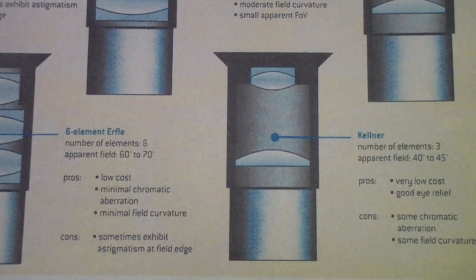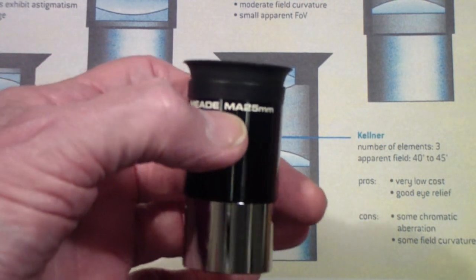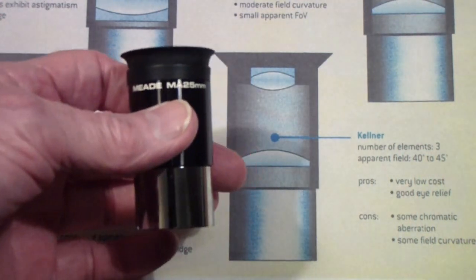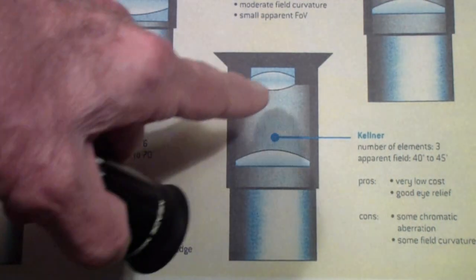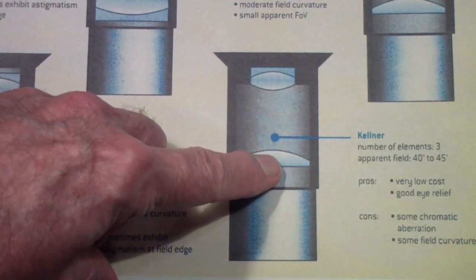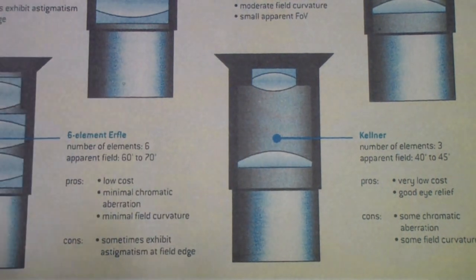Now, the Kellner eyepiece is sometimes modified, and that's what a Modified Achromat—an MA, Meade lens—is. It's a Kellner Modified Achromat. So basically, if you would open this up, what you would find inside is an arrangement like that: three elements. These work—they're reasonably useful, and for a low-priced telescope are a good way to go.